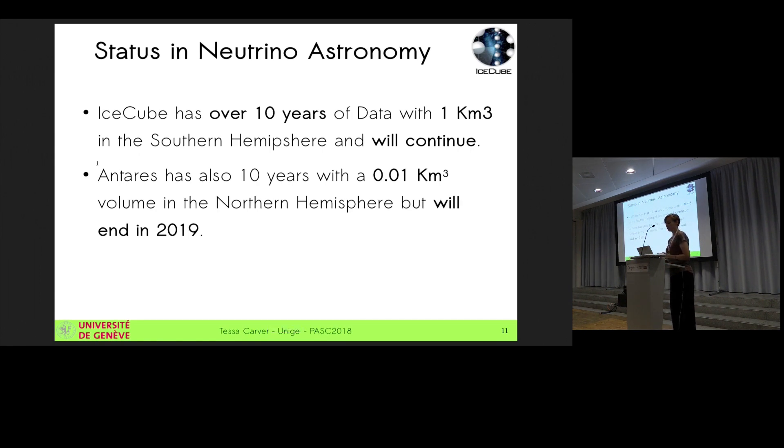And so what is the status in neutrino astronomy right now? I've been talking only about IceCube and IceCube has been running for over 10 years. We've been taking data. We're a kilometer cubed experiment in the Southern Hemisphere in the ice. And we're pretty stable, hoping to continue for upwards of 20 years from now is the idea. There's another very similar experiment called Antares, which is in the Northern Hemisphere in the Mediterranean. It's a bit smaller in size. Effectively it has a hundredth of the volume. And it's going to end in 2019 to make room for a new upgrade that will be working more efficiently.